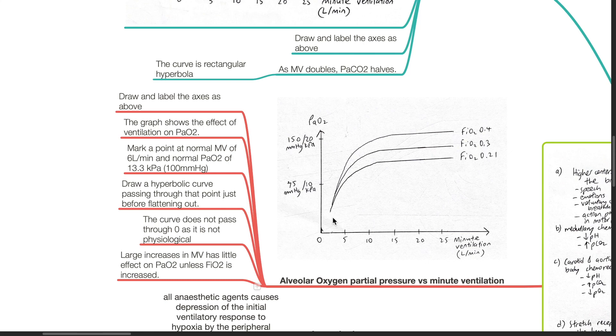The curve does not pass through zero as it is not physiological. Large increases in minute ventilation have little effect on PaCO2 unless FiO2 is increased.